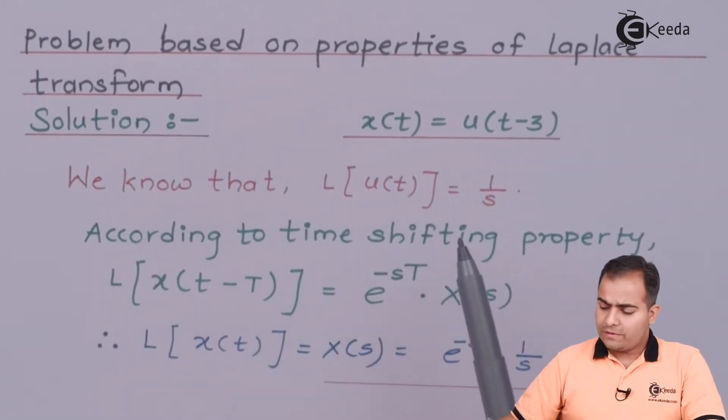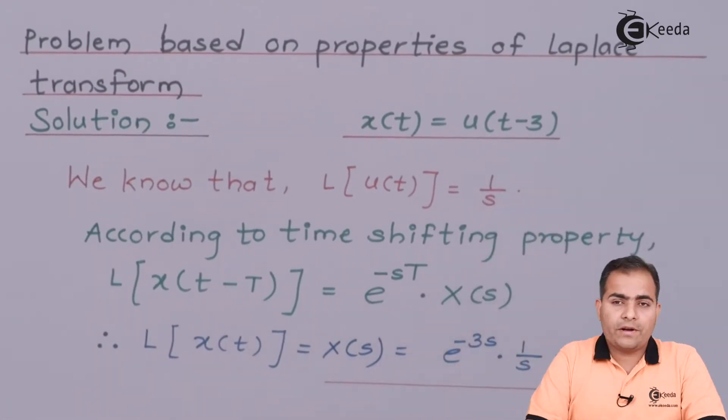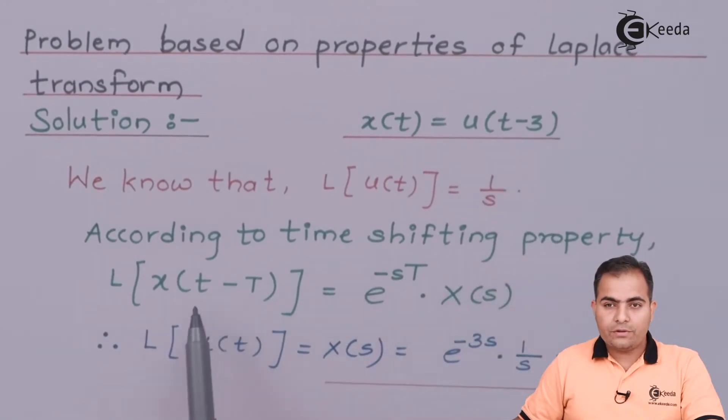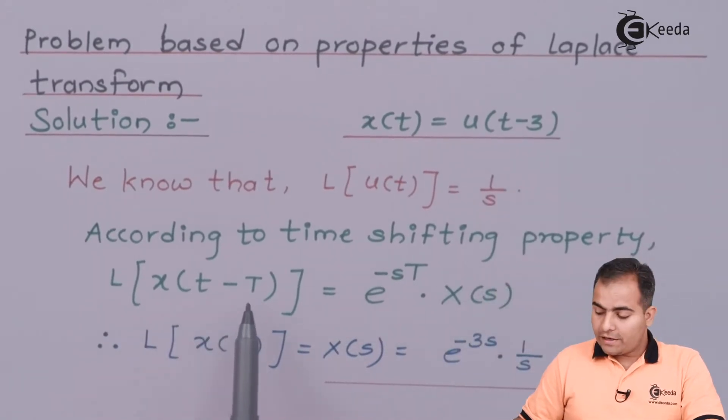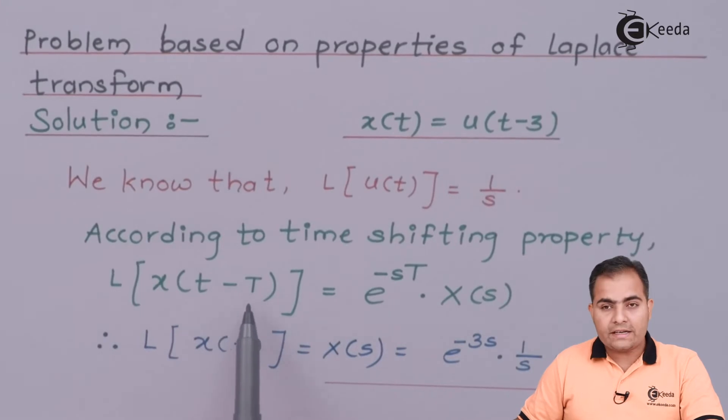Now as I told you, this function is delayed by 3, so I'm going to use a time shifting property. Here the minus sign is given, so of course I will use u(t-T) property. And according to my time shifting property, what is said? Laplace transform of a function which is delayed by T.